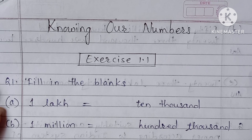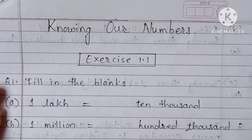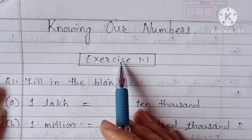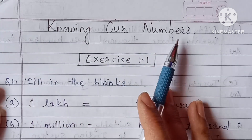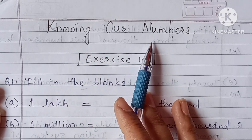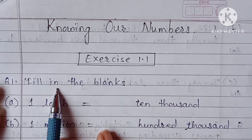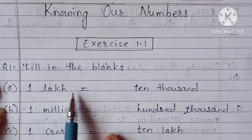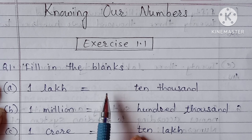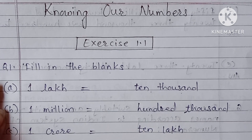Hello students, welcome to Advaita Education channel. 6th standard CBSE, chapter number 1 maths - Knowing Our Numbers. From that chapter we are going to solve Exercise 1.1. First question: fill in the blanks. 1,00,000 is equal to dash dash 10,000.